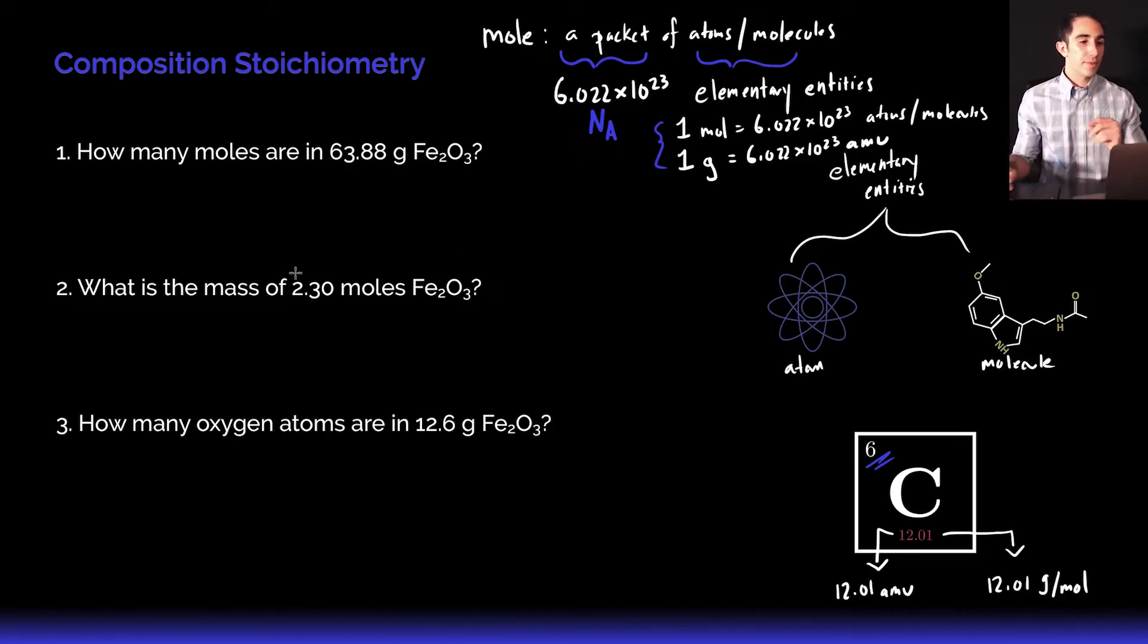The first question is how many moles are in 63.88 grams of iron 3 oxide or Fe₂O₃? What I want you to think about is if we were to actually measure this in atomic mass units, it would be an enormous number and kind of unreasonable. About 64 grams of iron 3 oxide is something that could probably fit in the palm of your hand. It makes a lot of sense to measure it in grams; it wouldn't make any sense to measure it in atomic mass units.